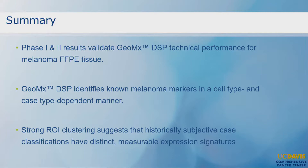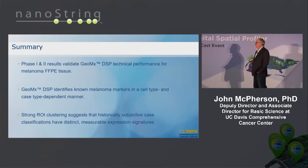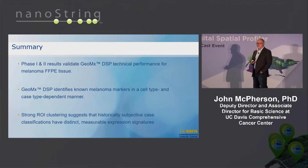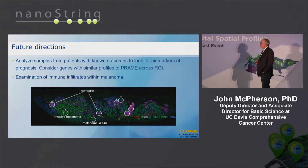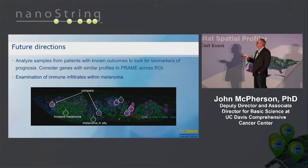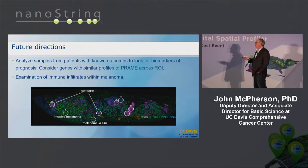In summary, the phase one and two results validated the platform — the technical performance was good, and this was on FFPE tissue, the currency of pathology, with low-cellularity and very heterogeneous samples. We identified known markers as expected and things clustered with the various classifications. With this great clustering, we think there are expression profiles we can get out of this. Future directions include analyzing the data for biomarkers distinguishing between the different classes, taking promising markers to more samples with patient outcomes to look for prognostic value, and examining immune infiltrates across the samples as potential targets.